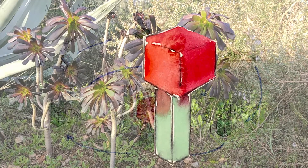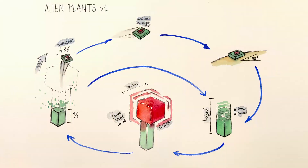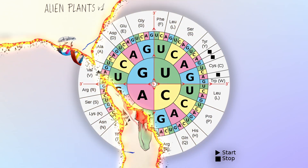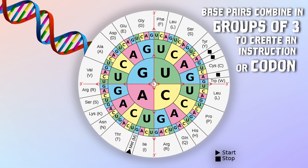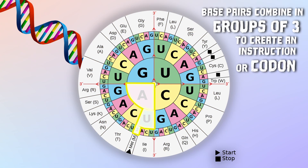Well, maybe not that simple. I need a new model similar to DNA — with a list of instructions to grow the plant.